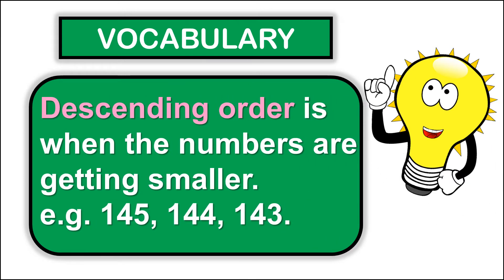Descending order is when the numbers are getting smaller. Example: 145, 144, 143. We start with the biggest number and end with the smallest number.